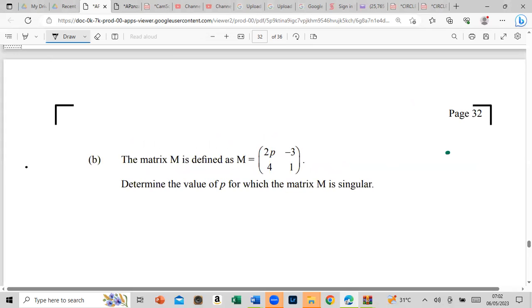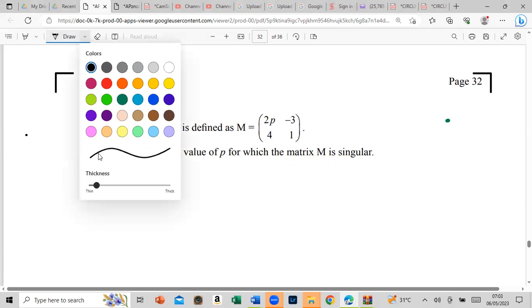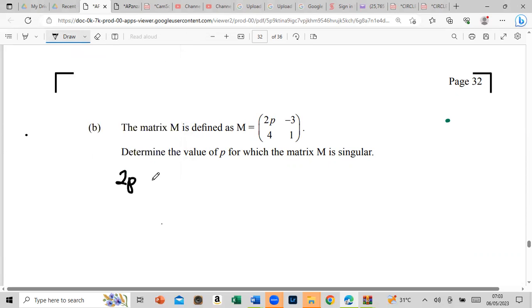Alright, so the matrix M is defined as 2P minus 3, 4, 1. Determine the value of P. So let me just rewrite back M. What we know is that a matrix is singular when the determinant is equal to 0. So if the determinant is 0, what's the determinant? The determinant is AD minus BC and that must equal to 0. That's the definition of a singular matrix.